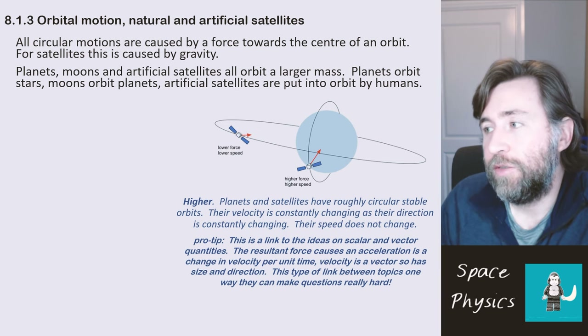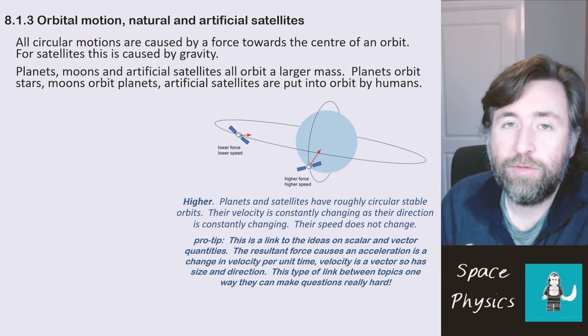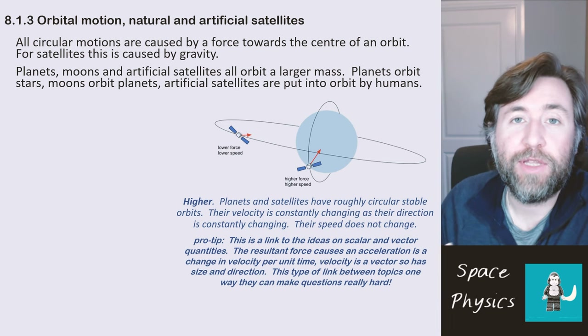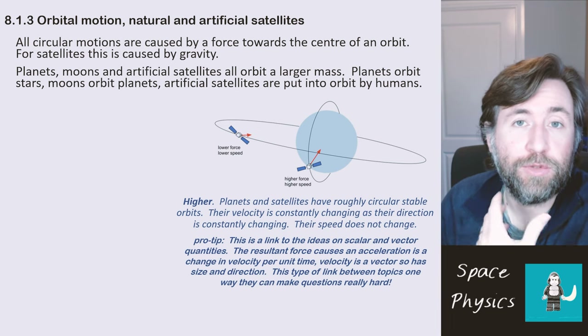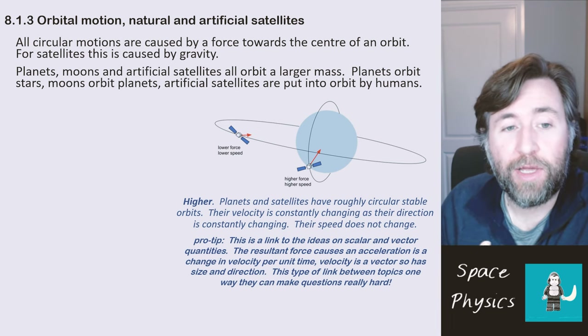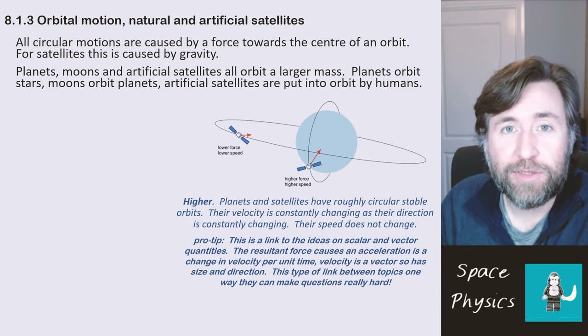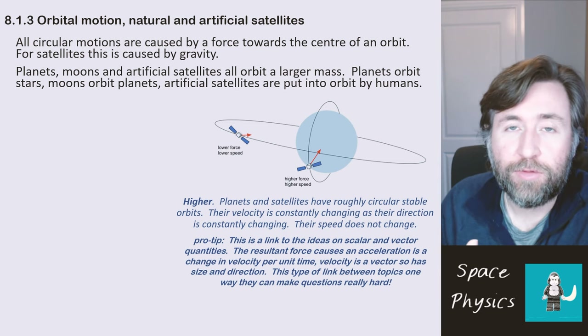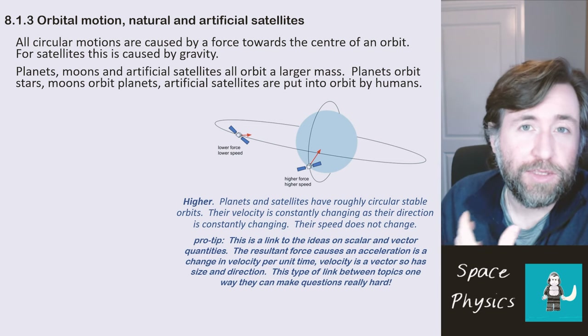Any acceleration must be caused by a resultant force. As you can see on the diagram, there's only one force acting on these objects in their orbit, and that is a force towards the centre of that orbit. We call that a centripetal force — a force towards the centre of an orbit that causes orbital motion.